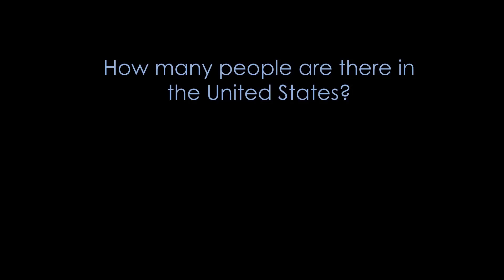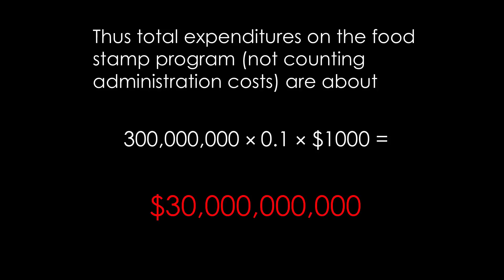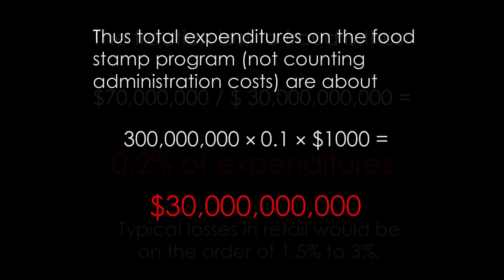How many people are there in the United States? We know that there's approximately 300 million people. So now let's do the calculation. We know that there's 300 million people. We times that by the proportion, 0.1 times the amount of money they're getting per year. Look how big that annual budget is for the program.